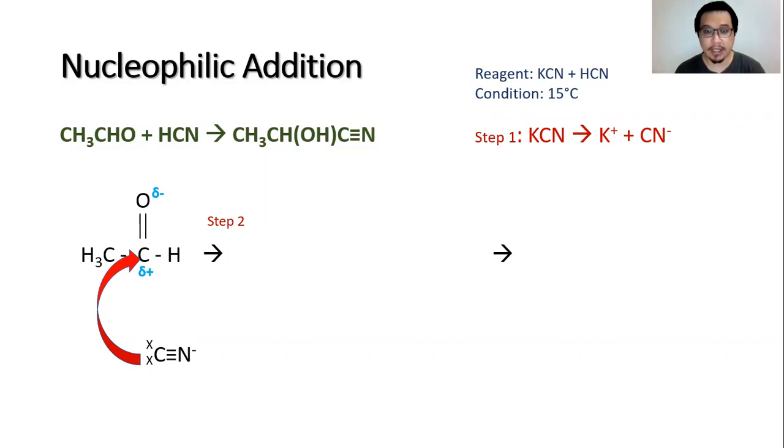Carbon would make five bonds, so we cannot allow that. Therefore, the pi bond will break. Both electrons are transferred to the oxygen, which is labeled delta negative.